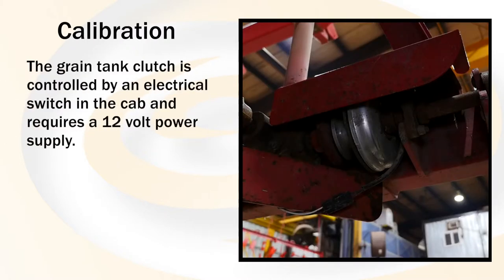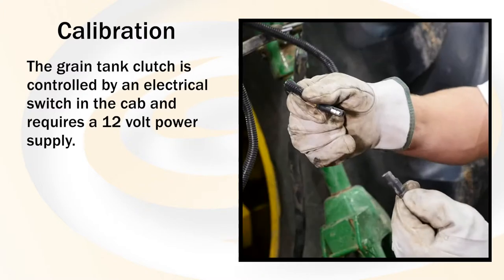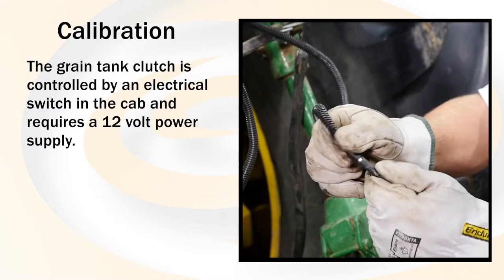The grain tank clutch is controlled by an electrical switch in the cab. This requires 12 volt power supply.